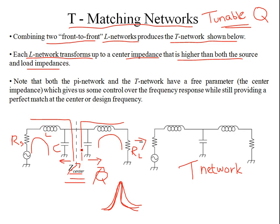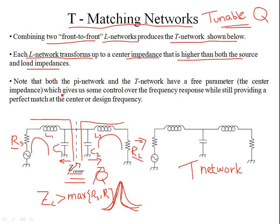In T networks, we label the elements L1, C1, L2, and C2, where C1 and C2 are shunt capacitive reactances. The key difference is that Zcenter must be greater than the maximum of Rs and RL, because the shunt reactive elements are connected across the higher impedance value. So it's the other way around compared to the pi network — the topology requires a higher center impedance.